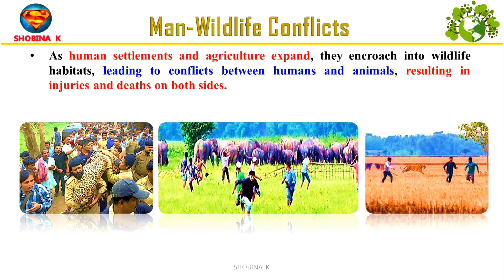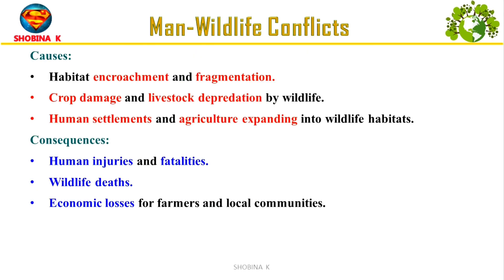As human settlements expand, the clash of spaces intensifies, leading to humans and animals harming each other — a phenomenon called man-wildlife conflict. Causes include animals losing their habitats due to urban and road expansion, animals eating crops and attacking livestock, and people building houses and farms in areas where wild animals used to live. Consequences include human injuries and fatalities, wildlife deaths, and economic losses for farmers and local communities.